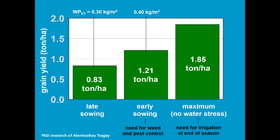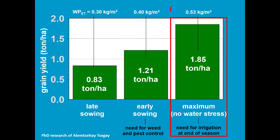But we can use that water to apply one or two irrigations at the end of the tef season. By applying irrigation at the end of the season, the crop yield raised to 1.8 tons per hectare and the ET water productivity to 0.5 kg per cubic meter.